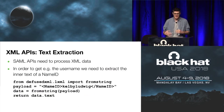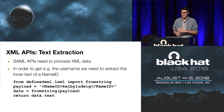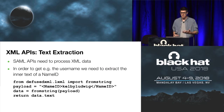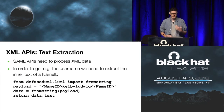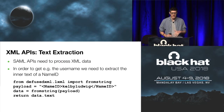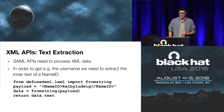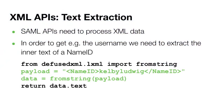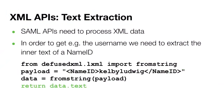Considering SAML library authors or SP developers may need some way to extract relevant XML data during the authentication process, let's look at how this is accomplished underneath the hood of these SAML APIs using lower-level XML APIs. This code snippet shows what extracting a name ID might look like at the XML API level using the popular Python LXML library. First we convert a string representing XML into an XML object, then we can call the .text method on that element to extract the inner text. The output of this code is simply the name ID value: Kelby Ludwig.